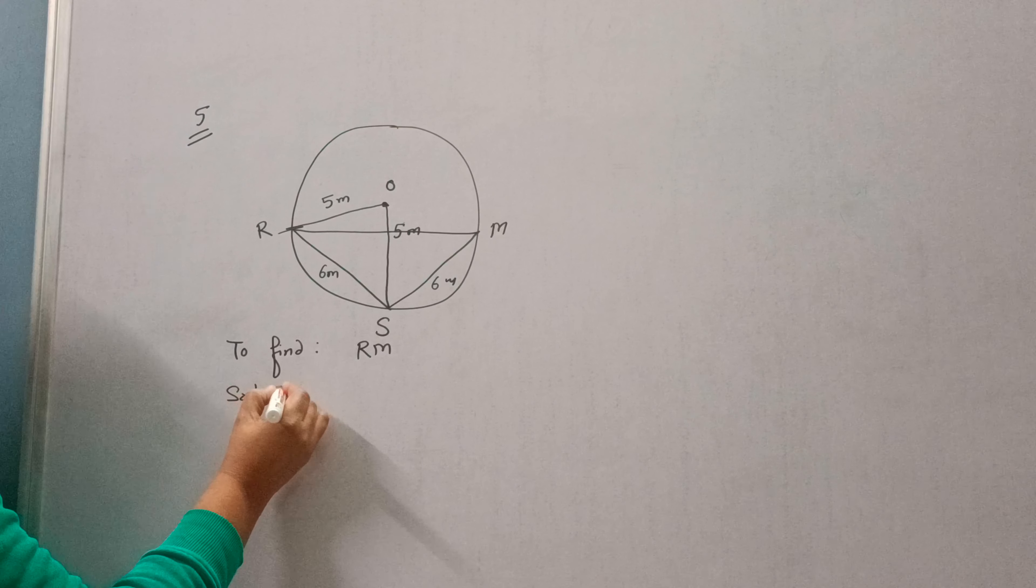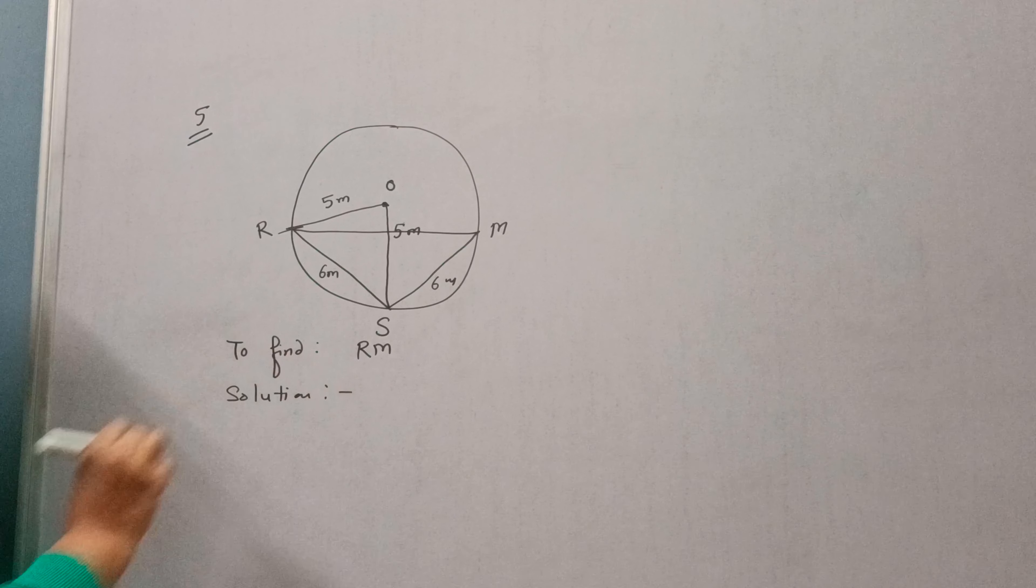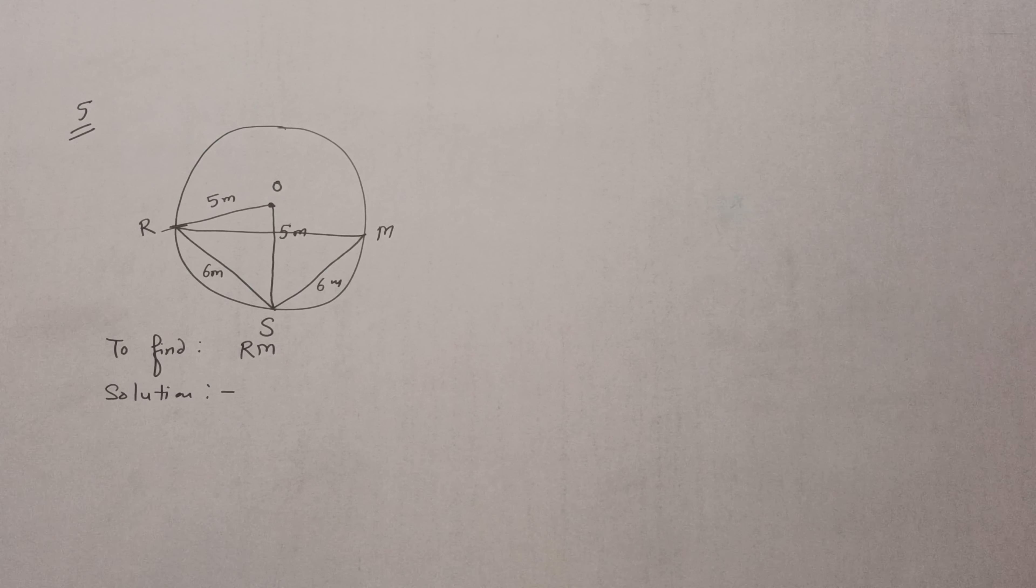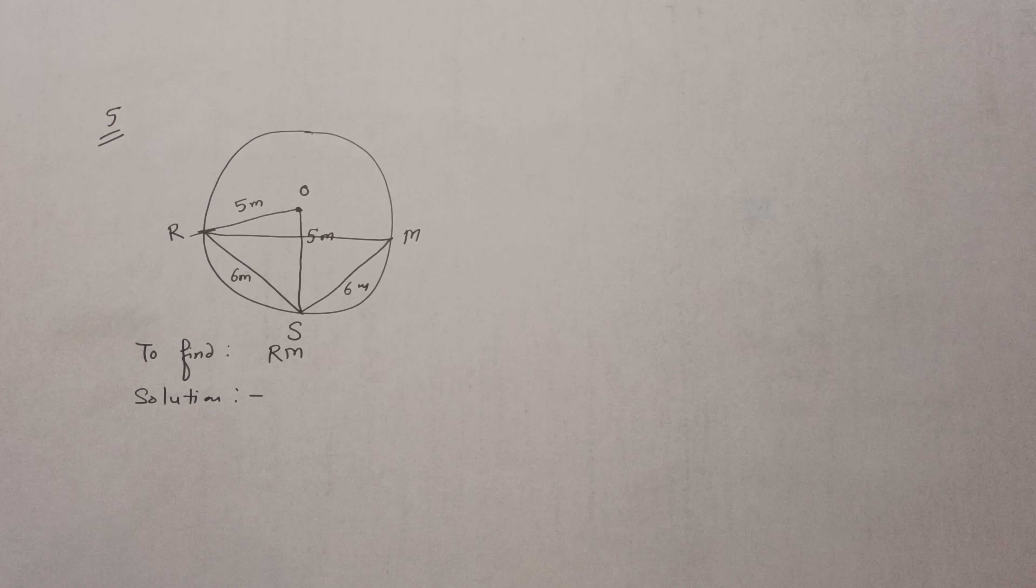First of all, we can find the area of triangle ROS by Heron's formula. So let's find the area of triangle ROS by Heron's formula.